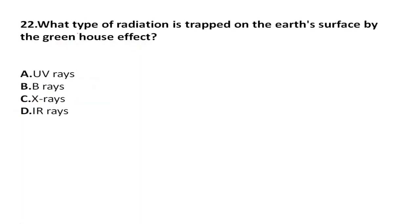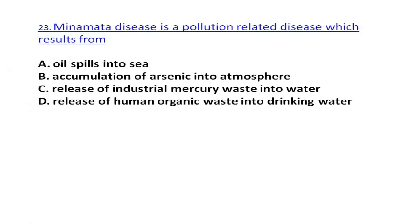What type of radiation is trapped on the Earth's surface by the greenhouse effect? The right answer is A: ultraviolet rays. Minamata disease is a pollution-related disease which results from the release of industrial mercury waste into water — please remember, it is due to mercury waste.